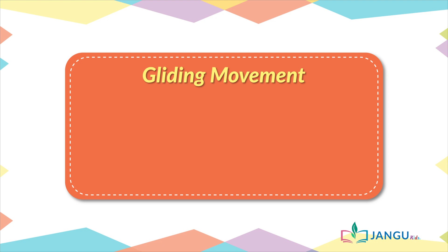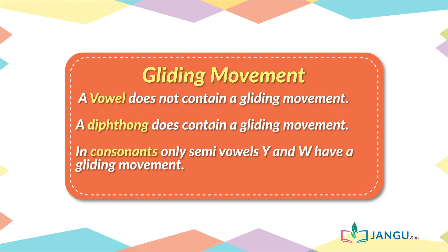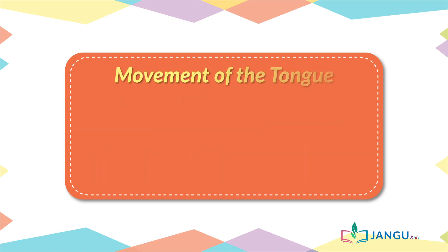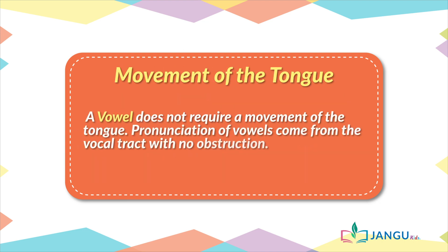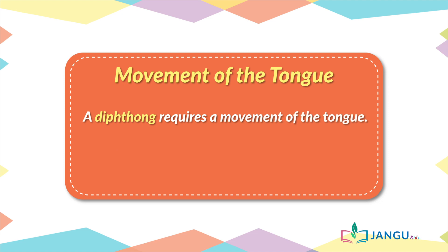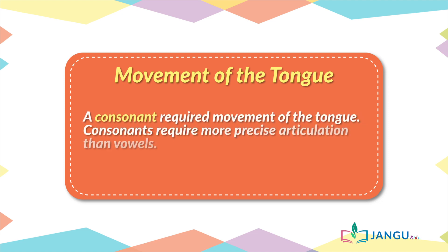Gliding movement: A vowel does not contain a gliding movement. A diphthong does contain a gliding movement. In consonants, only semi-vowels Y and W have a gliding movement. Movement of the tongue: A vowel does not require a movement of the tongue. Pronunciation of vowels comes from the vocal tract with no obstruction. A diphthong requires a movement of the tongue. A consonant requires movement of the tongue. Consonants require more precise articulation than vowels.